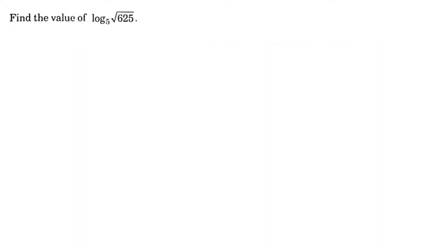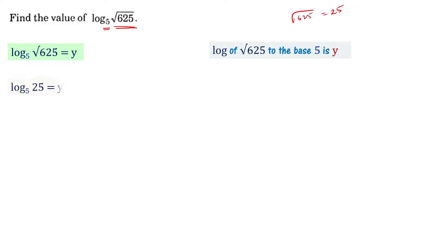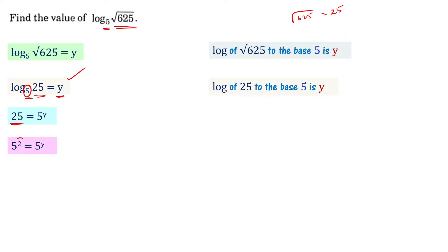Find the value of log of square root of 625 to the base 5. The square root of 625 is 25. So we can write this as log of 25 to the base 5, equal to y. Since 25 equals 5 squared, we get 5 squared equals 5 to the power y, so y equals 2. Therefore log of square root of 625 to the base 5 is 2.